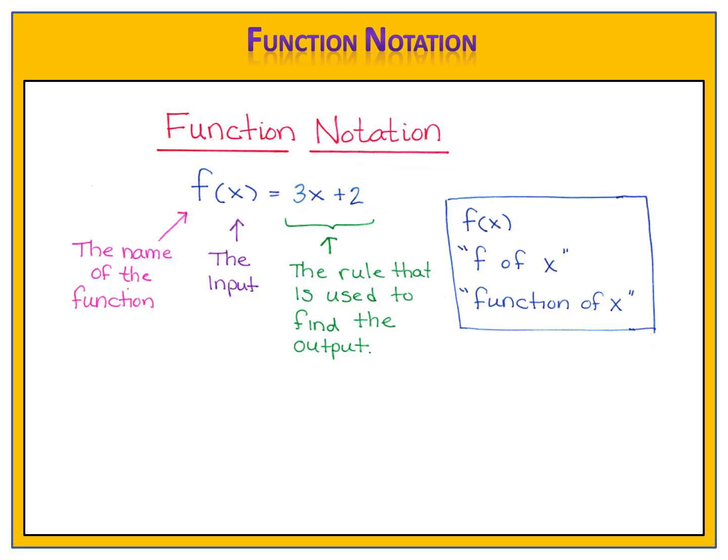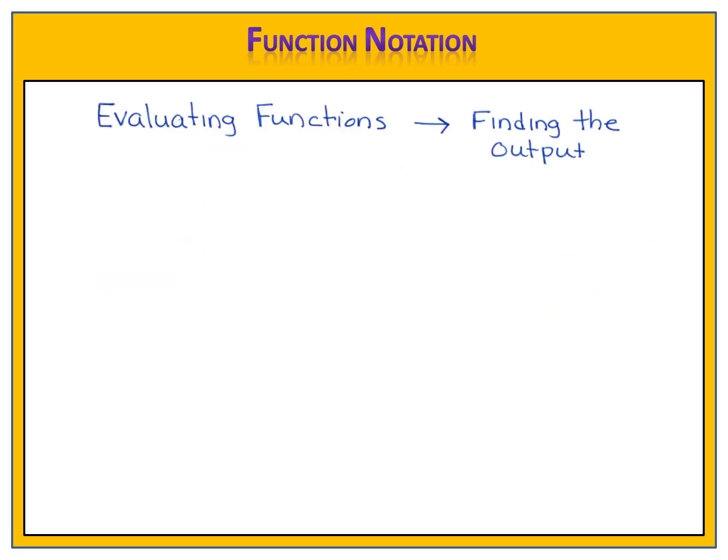Let's go ahead and look at a few examples. Often, you're going to be asked to evaluate a function. When we evaluate functions, we're actually finding the output. So in our first example, we have the function f(x) = 3x + 2, and we're asked to find f(5). When you see this, what this means is the input is 5. Find the output. If the input in this function is 5, what is the output that we get?